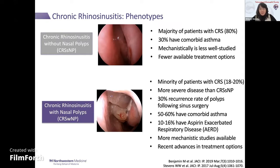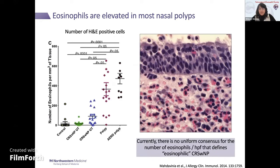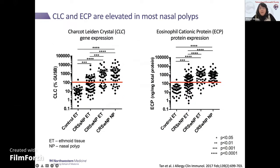Why would a group of eosinophil experts be interested in something growing in one's nose? It turns out that most nasal polyps have high levels of eosinophils compared to control healthy sinonasal tissue. But unlike eosinophilic esophagitis, there isn't really a well-established consensus on what cutoff of eosinophils in nasal polyp tissue defines it as eosinophilic. Levels of eosinophil granule proteins like Charcot-Leyden crystal protein and eosinophil cationic protein are also elevated in nasal polyps compared to healthy sinonasal tissue.